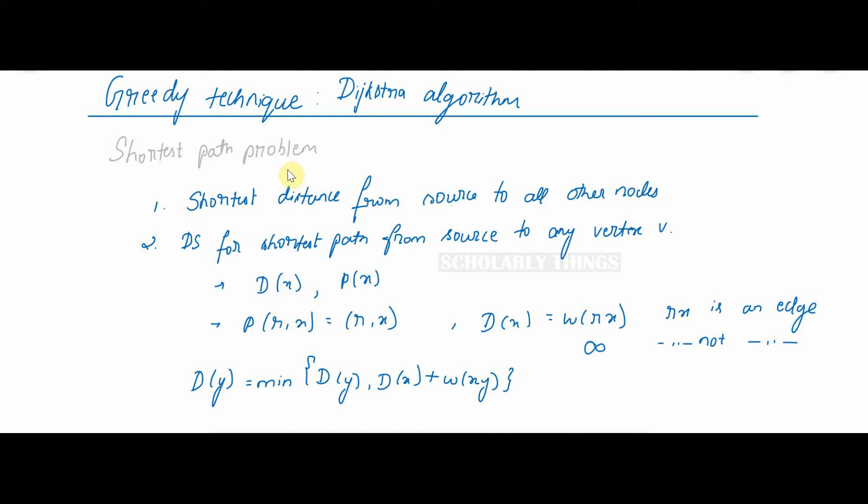Dijkstra algorithm has two stages. First, a greedy algorithm computes the shortest distance from source to all other nodes in the graph and saves in data structure. The second part is it uses the data structure for finding the shortest path from source to any vertex V.